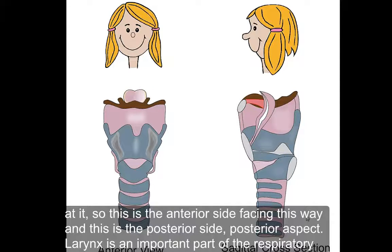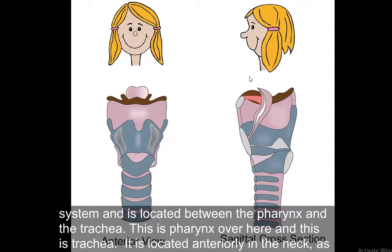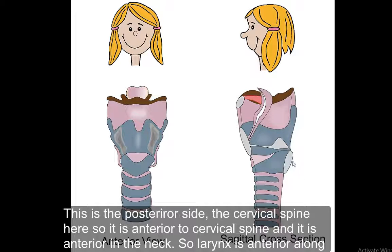The larynx is an important part of the respiratory system and is located between the pharynx and trachea. It is located anteriorly in the neck — the cervical spine is posterior, so the larynx is anterior to the cervical spine. Larynx is anterior in the neck along with the trachea and other respiratory parts.